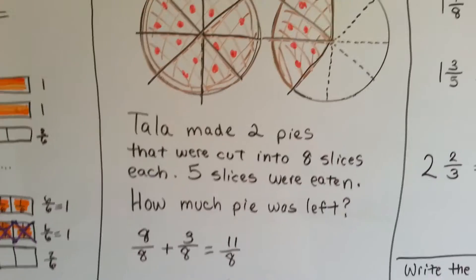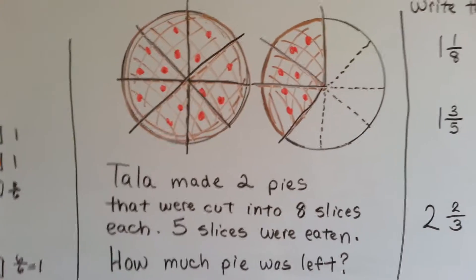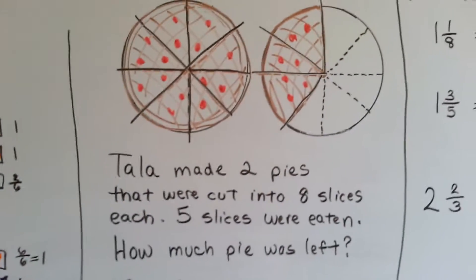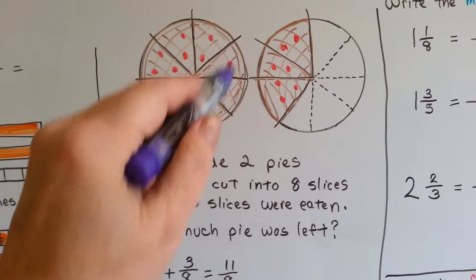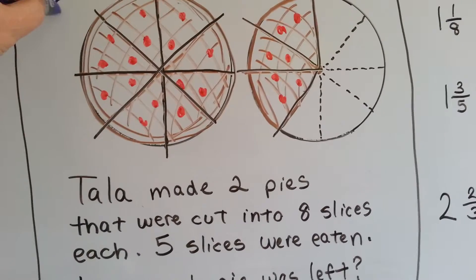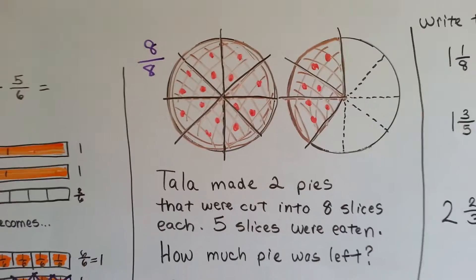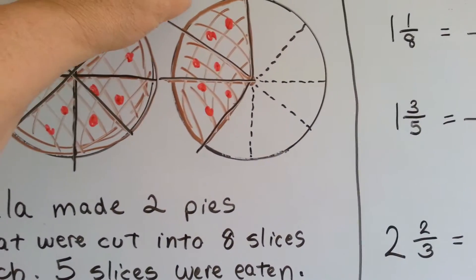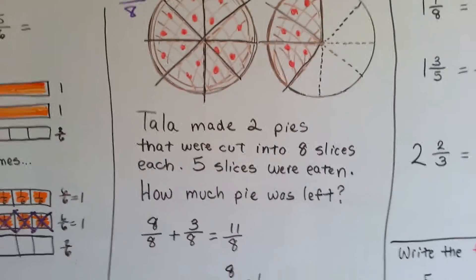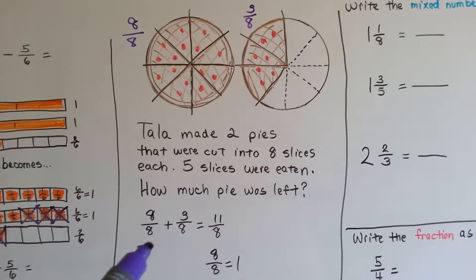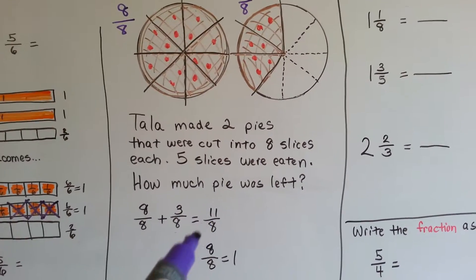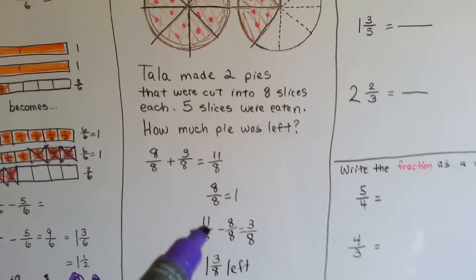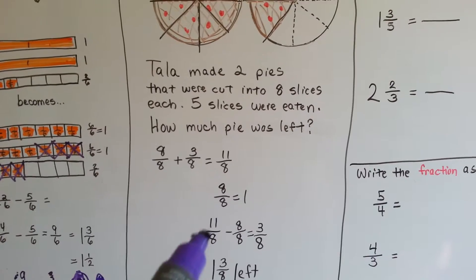Pala made two cherry pies, and they were cut into eight slices each. Five of the slices were eaten out of one pan, so how much pie was left? We can see there's a whole one here. Even though this represents eight-eighths — eight slices out of eight — there are three-eighths left over. If we added the eight-eighths to the three-eighths, we'd get eleven-eighths. Eight-eighths is one whole one. Eight-eighths taken away from the eleven-eighths...